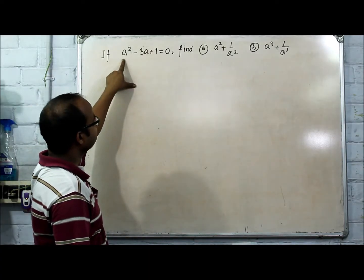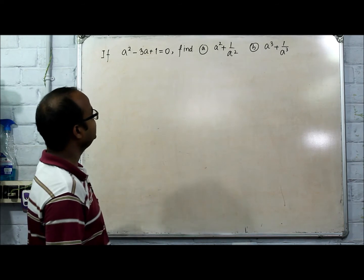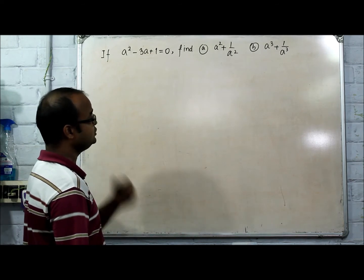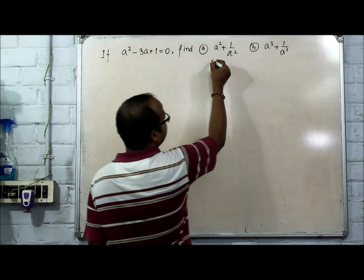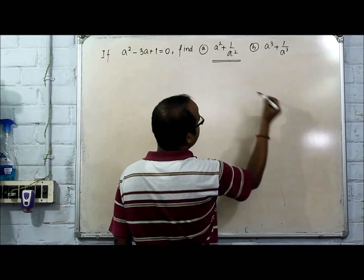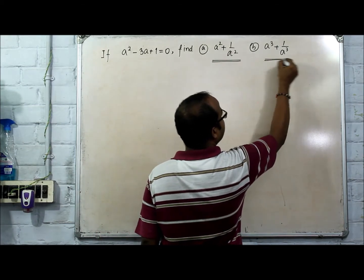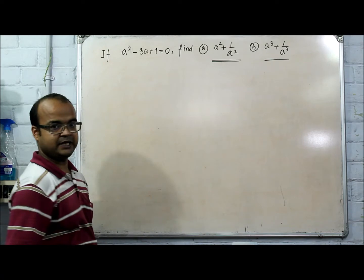It is given that a² - 3a + 1 = 0. You have to find out a² + 1/a² and a³ + 1/a³.